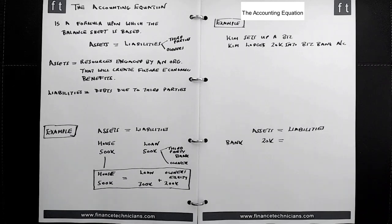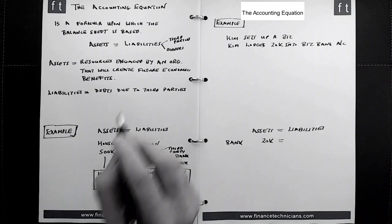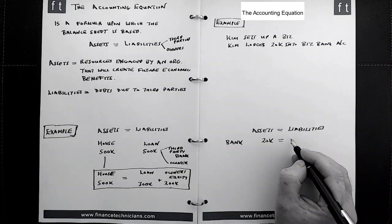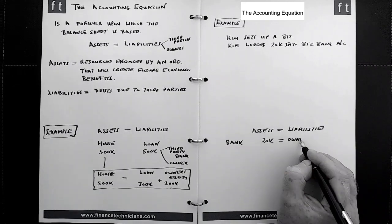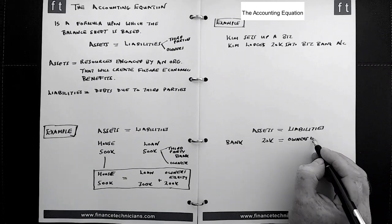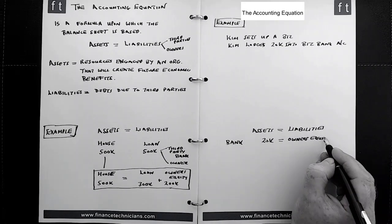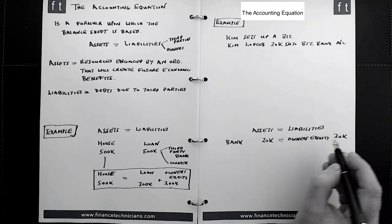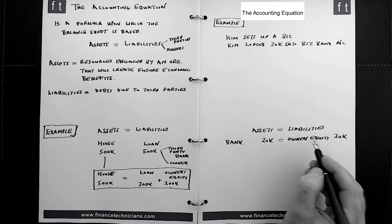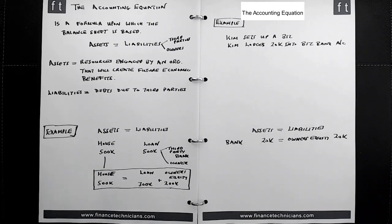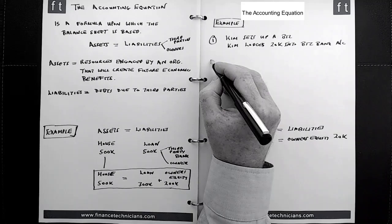This should be reasonably straightforward. 20k puts it into the bank, so the asset of the business is bank 20k. So what is the liability here? There are no third party liability. There's only owner's liability because Kim put the money in. So we will put that down as owner's equity of 20k. Now we have 20k of assets and 20k worth of liabilities. The accounting equation balances. So that's the first transaction we've dealt with.